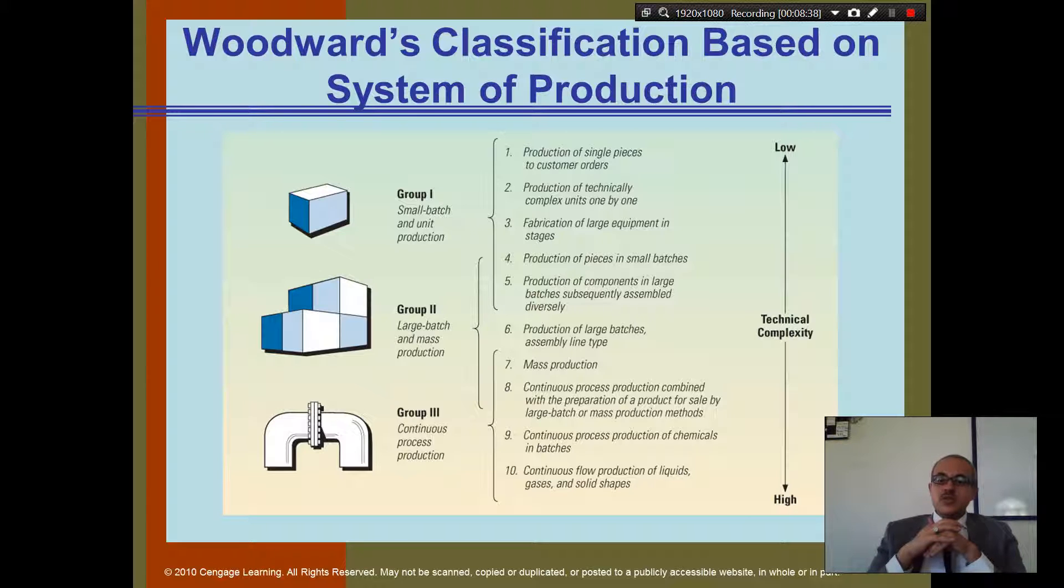Number four, production of pieces in small batches. So that's when you start to make a lot of pieces. So it is simple, but it has many. And then it goes on to number five, which is production in large batches. Assembly, more diversity. So you need to each one of them, you take care of it separately. So basically, these are different stages. How production process is going to be more complex, more equipment heavy, and more quantity.